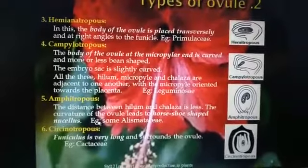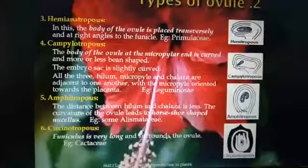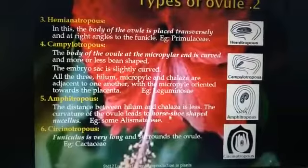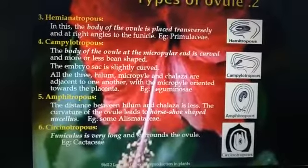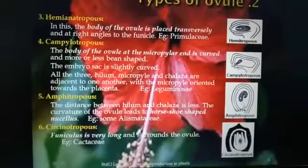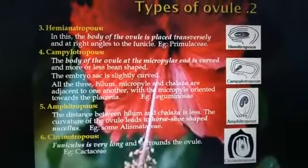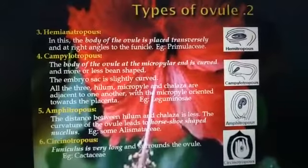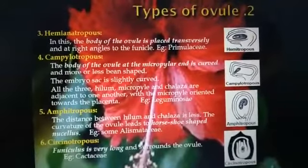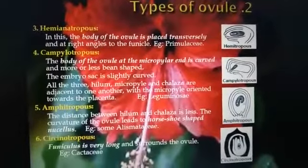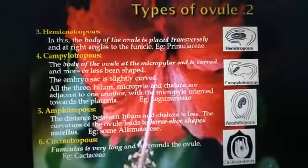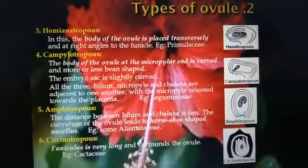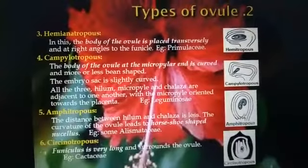The next type is the amphitropous ovule. In this ovule, the embryo sac or nucellus resembles a horseshoe-shaped structure — it is much curved. The distance between the hilum and the chalaza is very small compared to other types of ovules. This type of ovule is present in some members of the Alismataceae family.